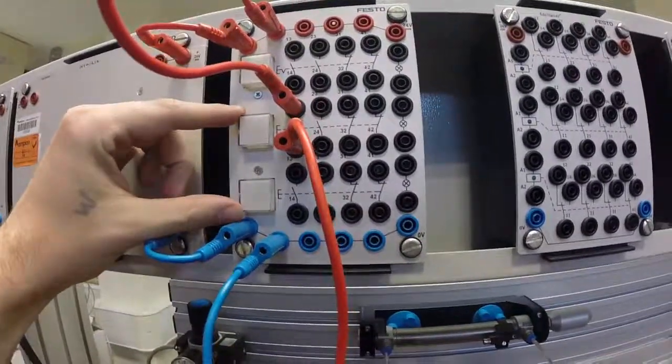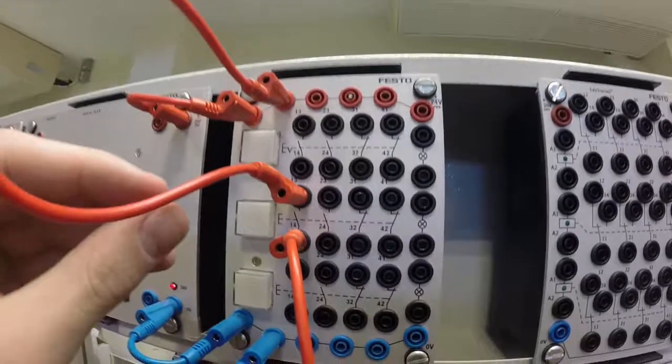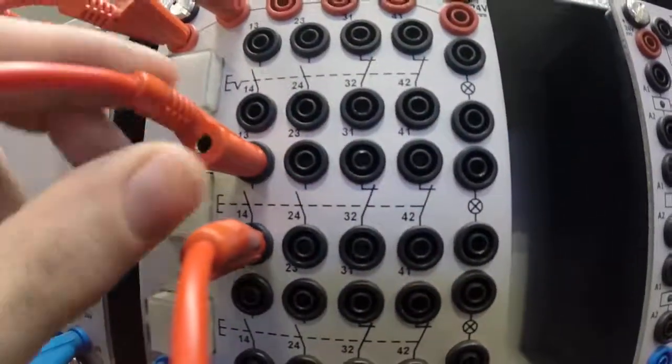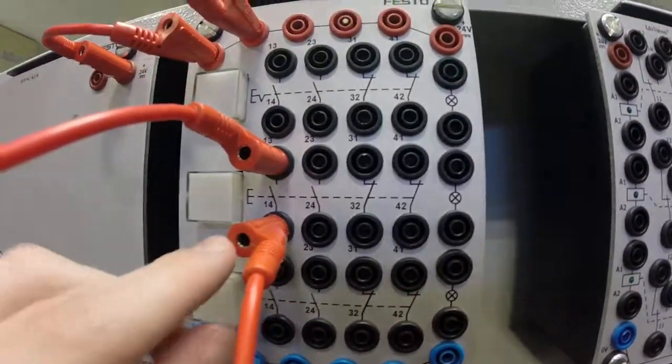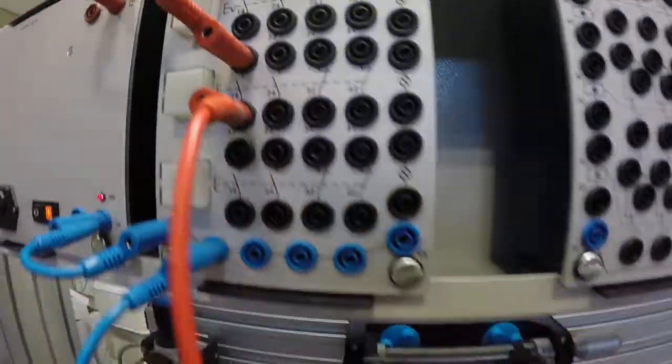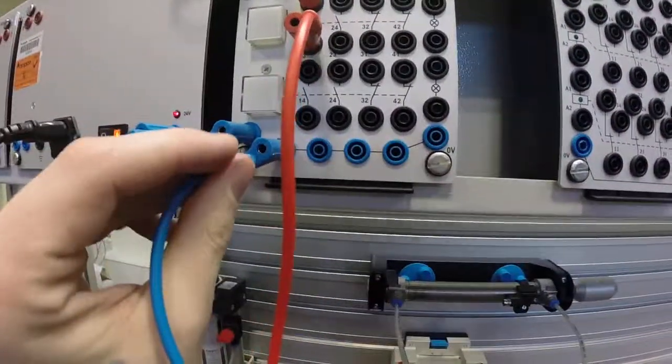We're just going to have two separate push buttons operating these. All we're doing is taking power down into the top of one of the normally open switches, then coming out from the bottom of the switch into the solenoid, and then getting grounded out.